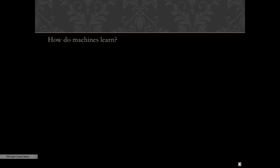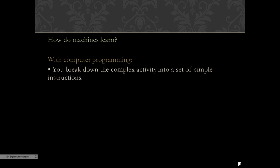How do machines learn? With computer programming, you break down the complex activity into a set of simple instructions. You use these instructions to tell the machine how to perform the task.